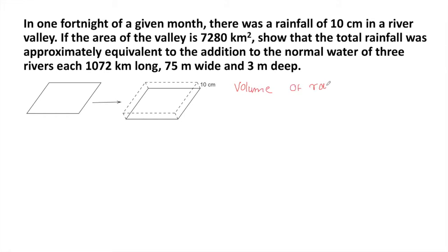Volume of rainfall. The basic formula for finding the volume is area into height. So here the area is given as 7280 square kilometers, and height is 10 centimeters. It is in kilometers and this is in centimeters.